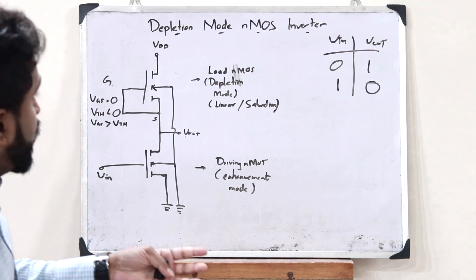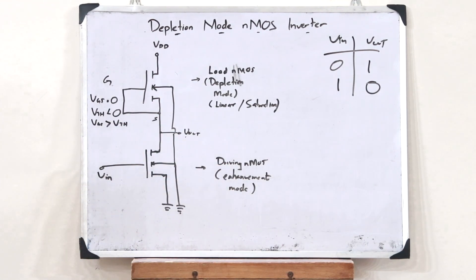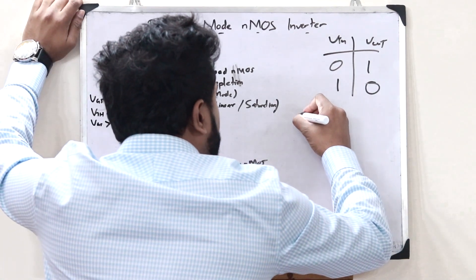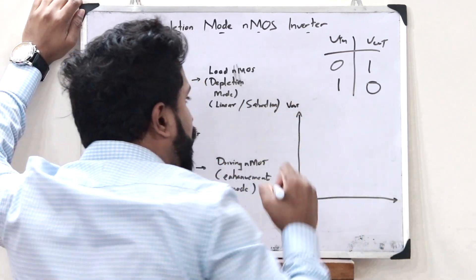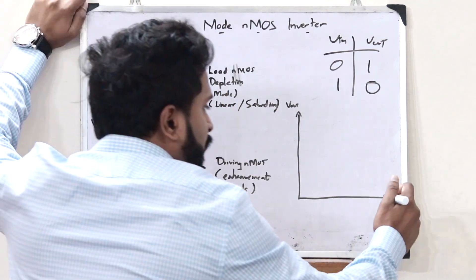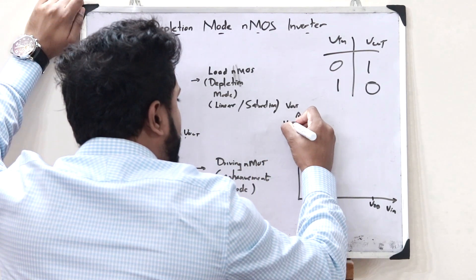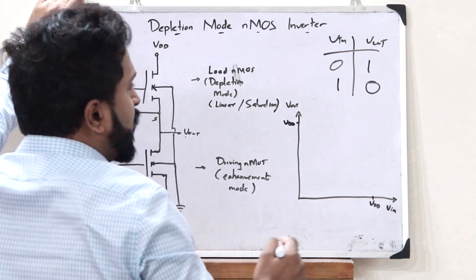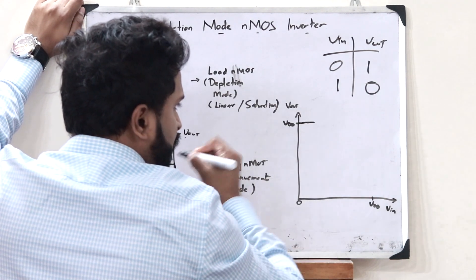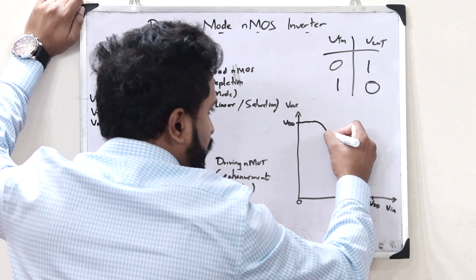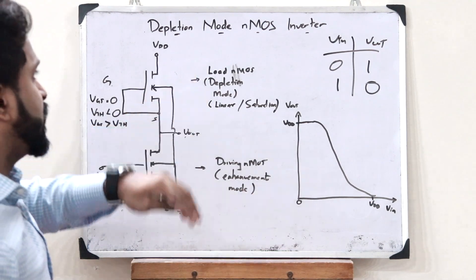Hence, we have now successfully constructed a particular inverter with the help of two NMOS — one is in the depletion mode and the other one is in the enhancement mode. Now let us see the input-output voltage characteristics of a depletion mode NMOS inverter. Here, we have the output voltage VOUT and here we have the input voltage VIN. If this is the maximum input voltage which is VDD and if this is the maximum output voltage VDD which can come out from here, then for 0 input voltage we would have a maximum voltage over here. But with time, this will now reduce and come like this. This is the input-output voltage characteristic of a depletion mode NMOS inverter.